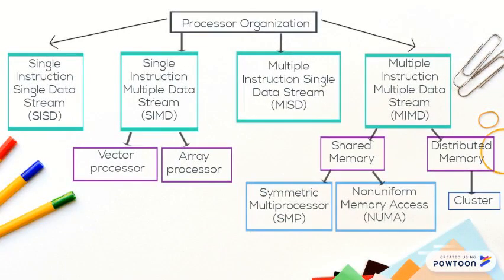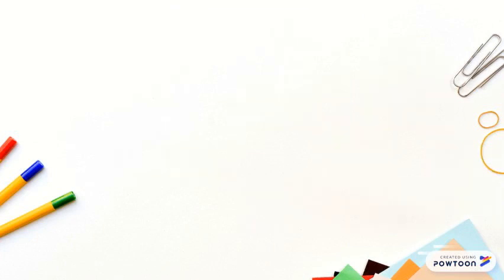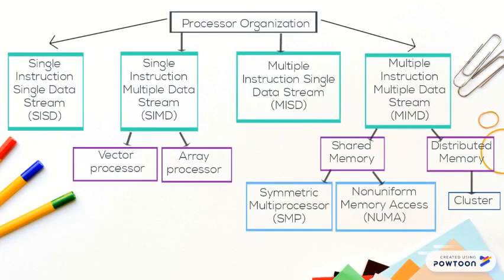Processor organization of parallel architecture is divided by four. First, single instruction single data stream SISD. Second, single instruction multiple data stream SIMD, which has two types. First, vector processor and array processor. Third is multiple instruction single data stream MISD. Fourth, multiple instruction multiple data MIMD, also divided by two: shared memory and distributed memory.